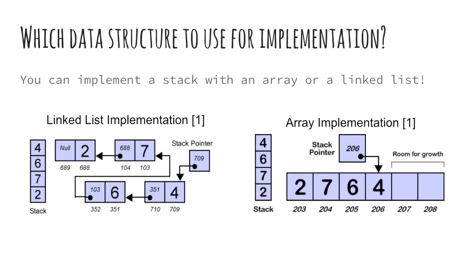Similarly, if we decide to use arrays for implementation, then we need to maintain a special variable which will store the index to the topmost element. Remember that stack allows insertions only at one end. So in linked list implementations, the new elements are inserted at the head of the list. We are not allowed to insert elements at the tail or in between the list. This is important to understand while implementing.